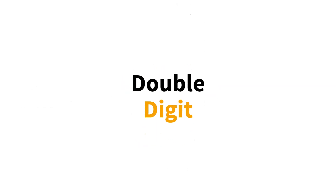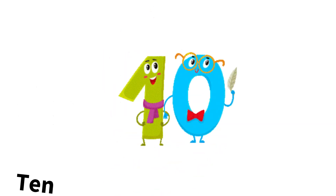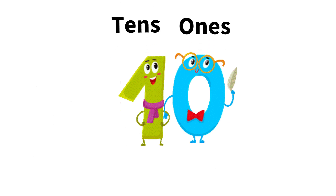Today we will be looking at double digit numbers from 10 to 20. Our double digit numbers are really just the single digit numbers in different orders. When we start at 10, we are repeating the number 1 along with 0. So number 10 is 1 and 0 — that two-digit number has 0 in the ones place and 1 in the tens place. So 10 is really one group of 10.